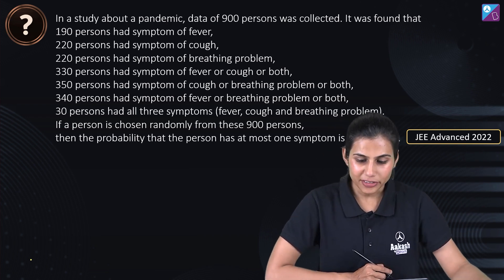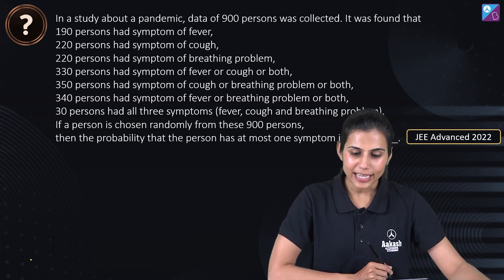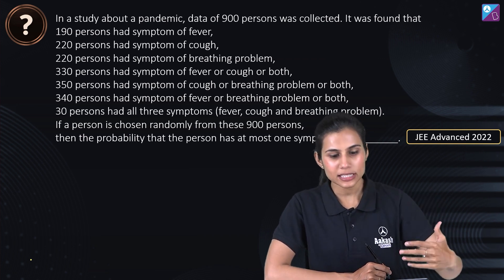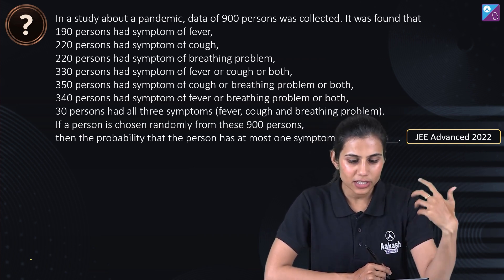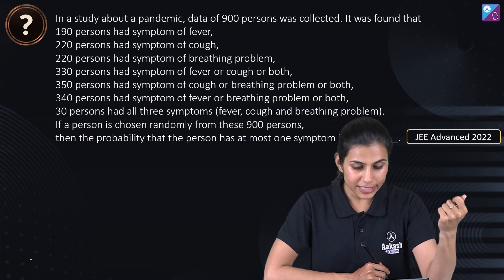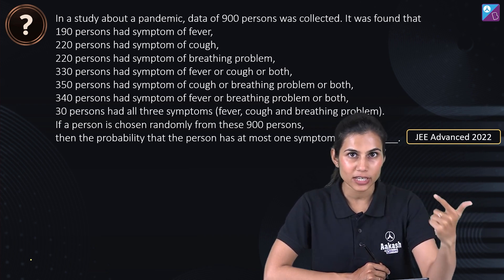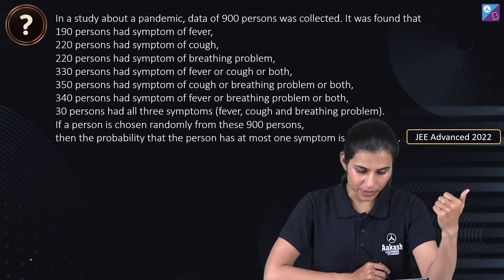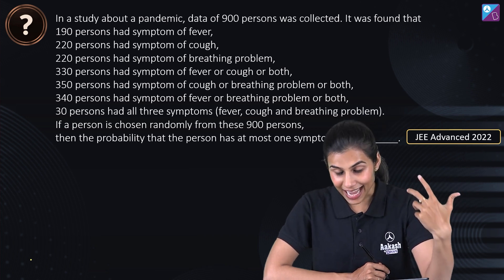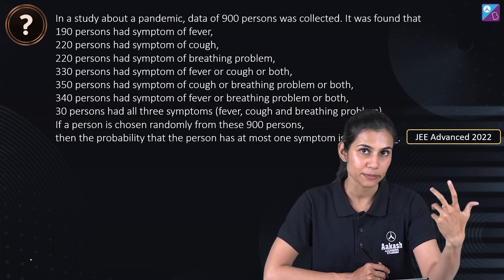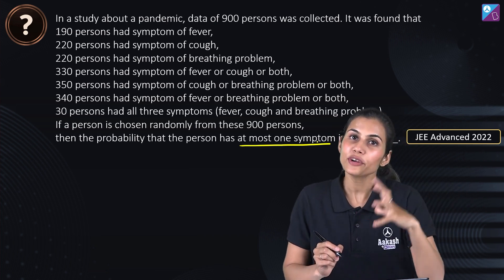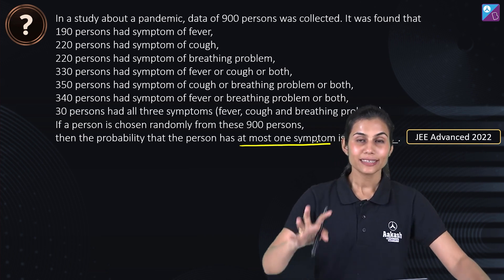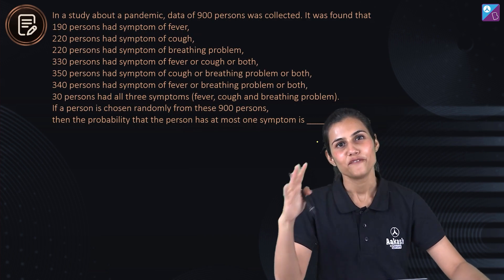Let's quickly attack it. A dataset of 900 persons was collected. You can see numbers written for persons who have symptoms of fever, cough, and breathing problems. 30 persons have all three symptoms. If a person is chosen randomly from these 900 persons, what is the probability that the person has at most one symptom? At most one symptom means either no symptom or exactly one symptom.